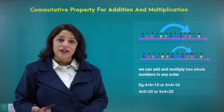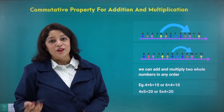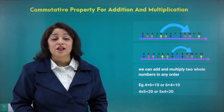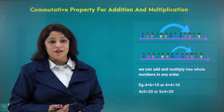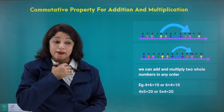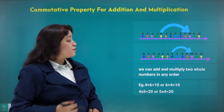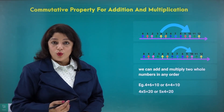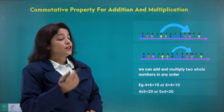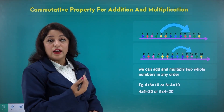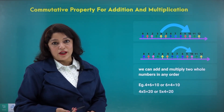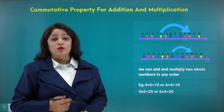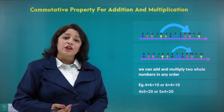But can we subtract and divide in any order also? Try it on your own — you'll find we cannot subtract and we cannot divide numbers in any order; the result will be different in both cases. So the commutative property is applicable only for addition and multiplication.